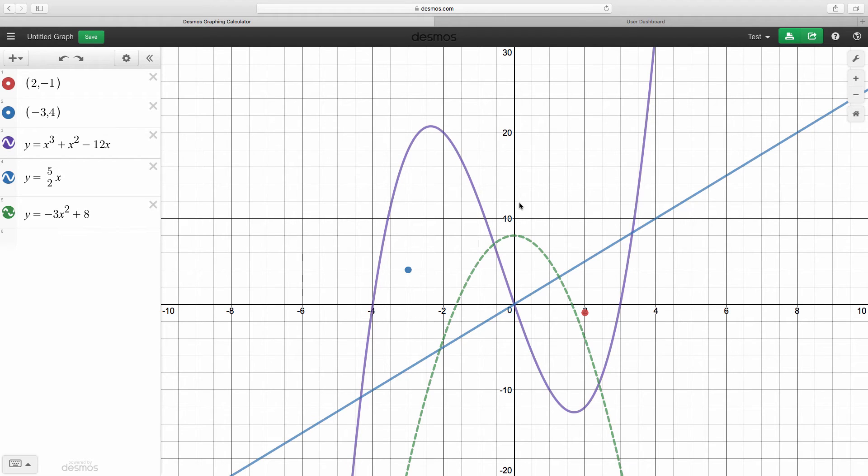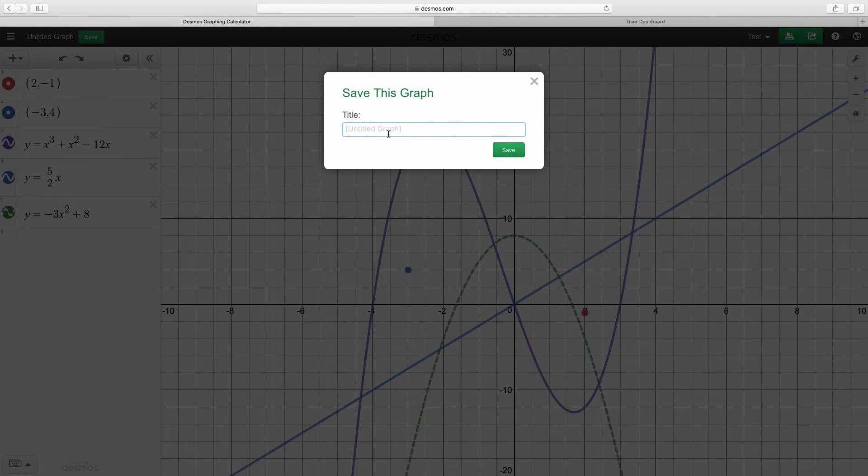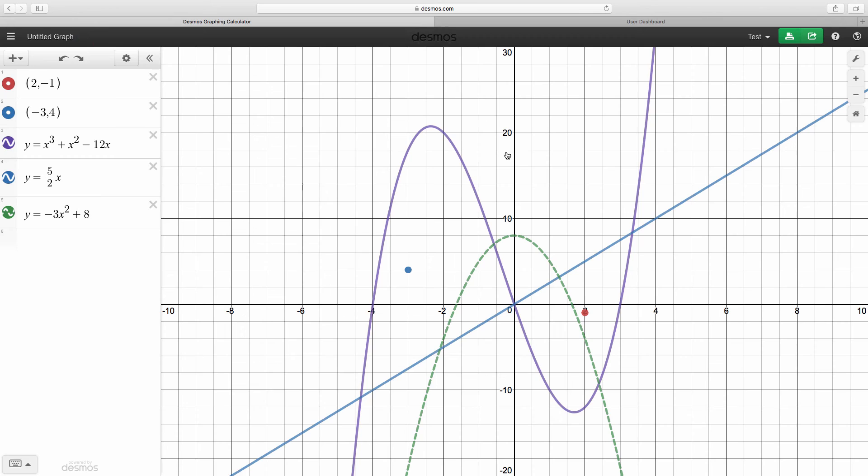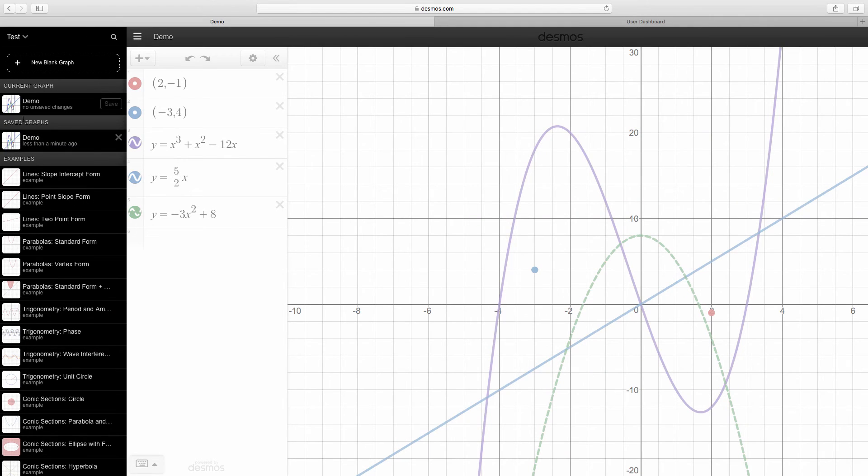Next we're going to look at how to save our graph. So to do that, you're going to click up here where it says untitled graph. You're going to click on the name and it's going to let you rename your graph. So I'm going to call this one demo. The whole reason we created an account was so that we had this option to save. So once you save your graphs, if you click on this three bar over here, you can see your saved graphs right here. If you want to delete it, you just click the X.